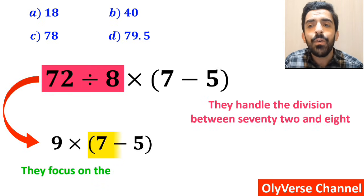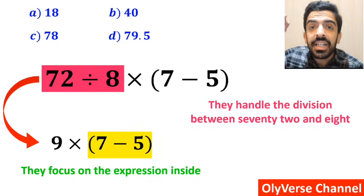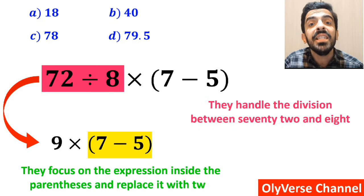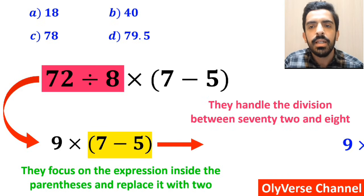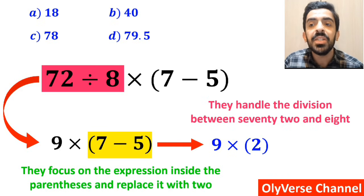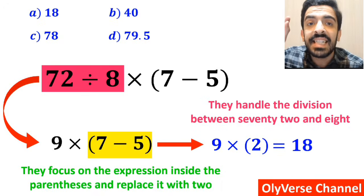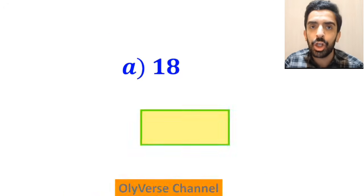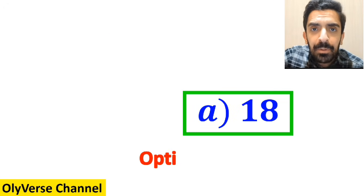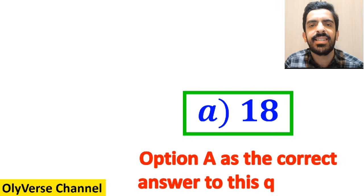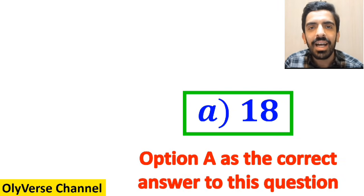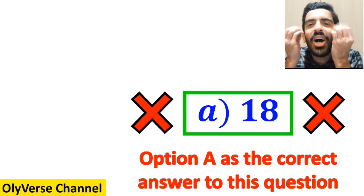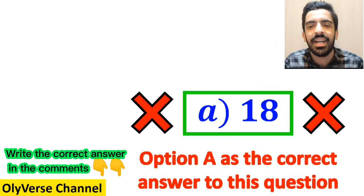In the final step, they focus on the expression inside the parenthesis and replace it with 2. So this expression becomes 9 multiplied by 2, which gives them the answer 18. They quickly look at the options and choose option A as the correct answer. But I have to say, we were tricked — it's not the correct answer to this question.